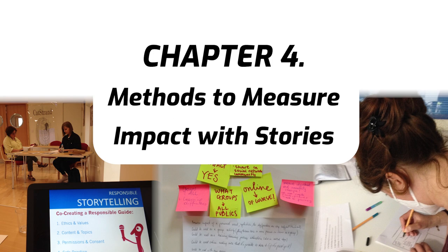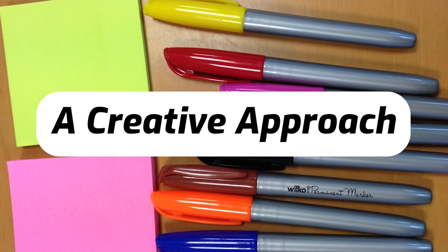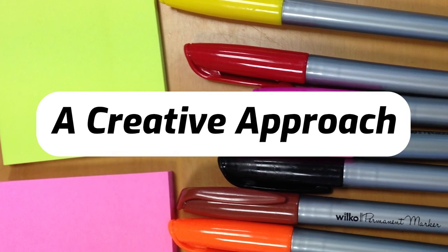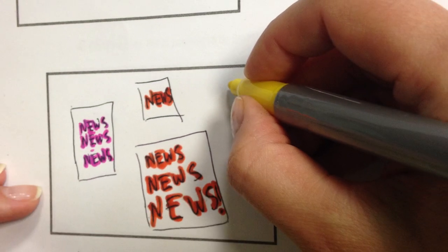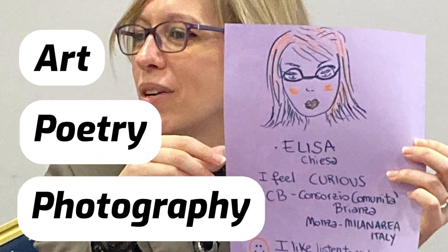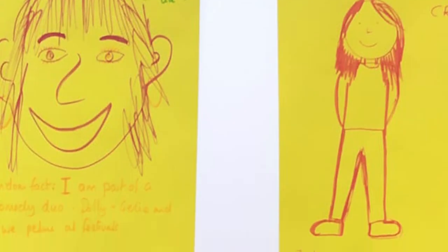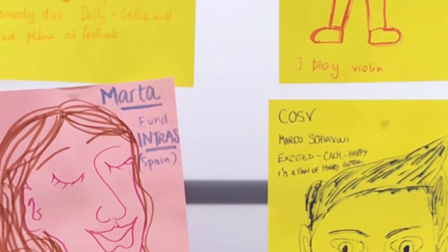Each chapter has a video guide that goes with it. Having a creative approach to measure impact with stories can be very helpful. Using stories of lived experience to measure impact will help connect to people in a way that techniques such as surveys can't. Creative formats like art, poetry, and photography engage with people on a different level and can help people to express their feelings, thoughts and ideas in a more insightful and meaningful way.